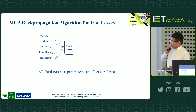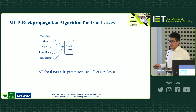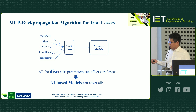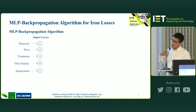So, considering that all the materials, sizes, frequency, flux density, and temperatures can affect the core loss — how do we consider all these discrete parameters together? Artificial intelligence can help us learn how these input parameters affect core losses. And then we chose one of the artificial intelligence approaches: multi-layer perceptrons based.